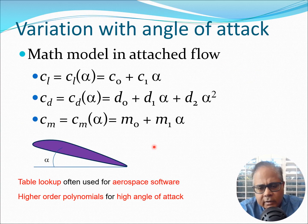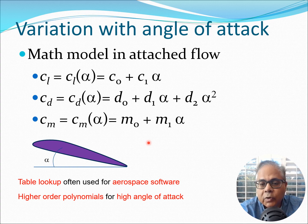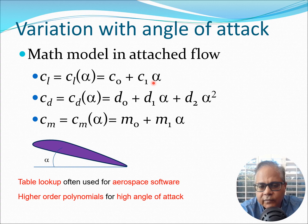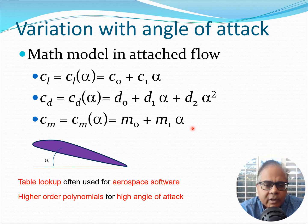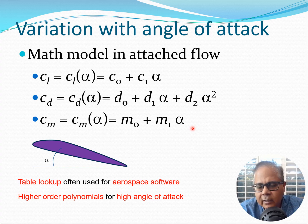Now let's turn to the math models for the attached flow region, below stall. CL can be expressed as C0 + C1*alpha, where C0 and C1 are constants obtained from experimental data by fitting a straight line. CD can be expressed as D0 + D1*alpha + D2*alpha^2, and CM is M0 + M1*alpha. These simple models are very often used — you can derive expressions in terms of CL, CD, CM and then substitute these equations along with the corresponding alpha values.